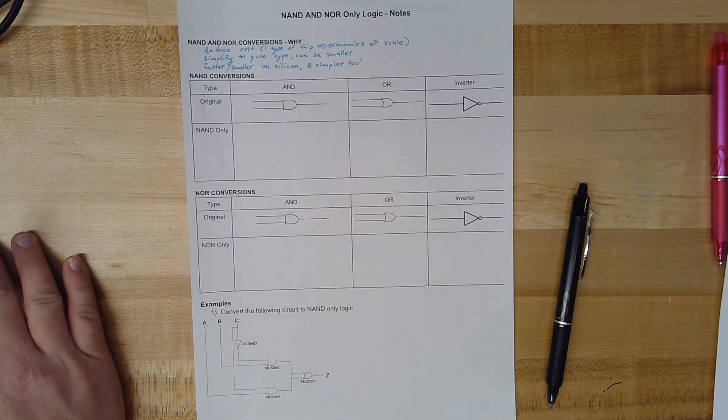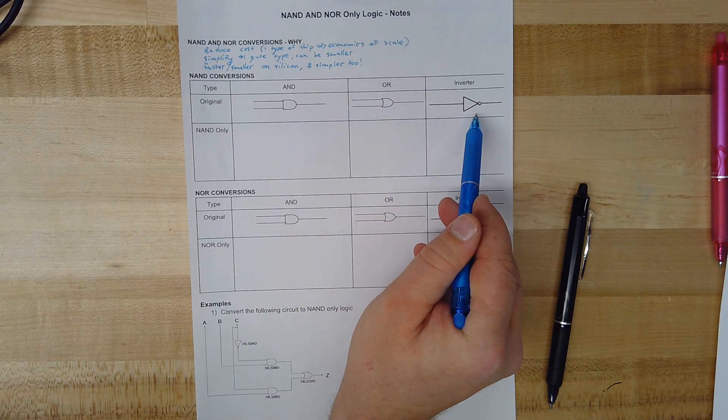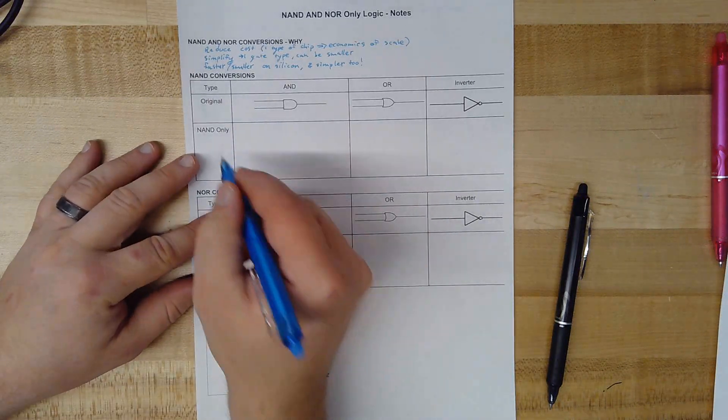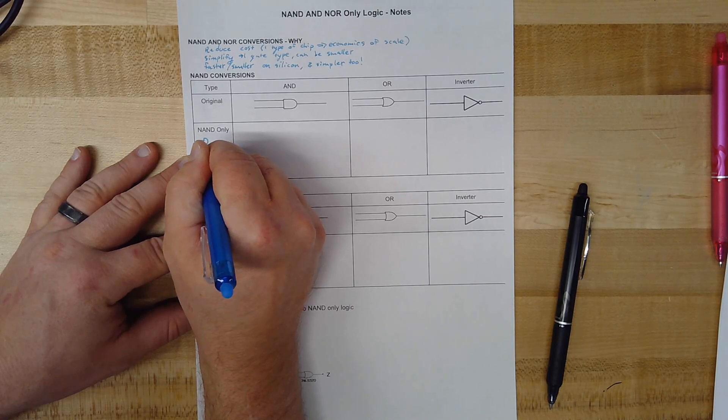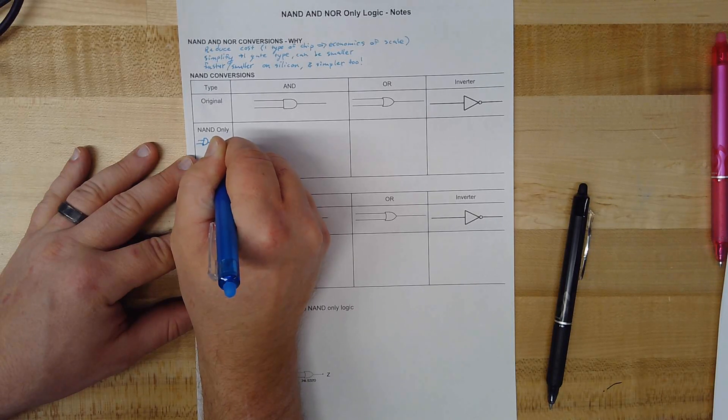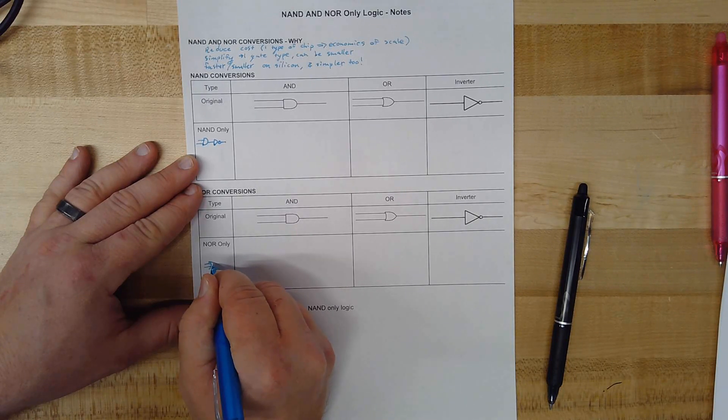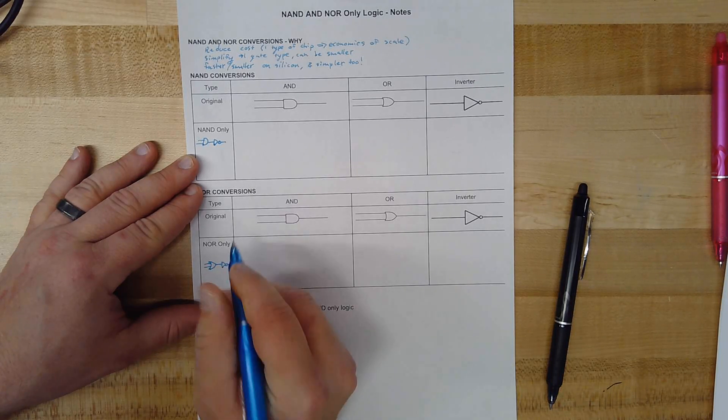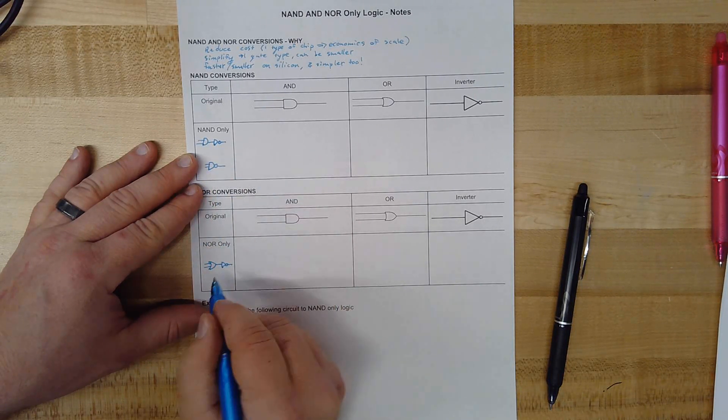It turns out you can actually take any AOI logic circuit built out of ANDs, ORs, and inverters and convert it to use only NAND gates. A NAND gate is essentially an AND gate that is built naturally to have an inverter on its output. Same thing with a NOR gate. NOR gates are essentially an OR gate that has an inverter built into its output. Those get redrawn in this case because it is its own type of gate.